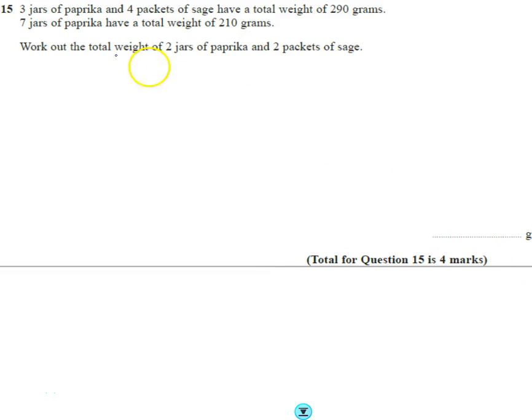Okay, so we've got some information here. 3 jars of paprika and 4 packets of sage have a total weight of 290 grams. 7 jars of paprika have a total weight of 210 grams. Work out the weight of 2 jars of paprika and 2 packets of sage.